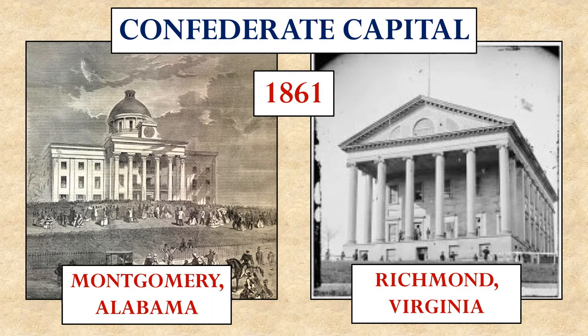Montgomery, Alabama, where they held this convention, served as their temporary capital for a short time, before it was moved to Richmond, Virginia, where they thought it would be permanently.